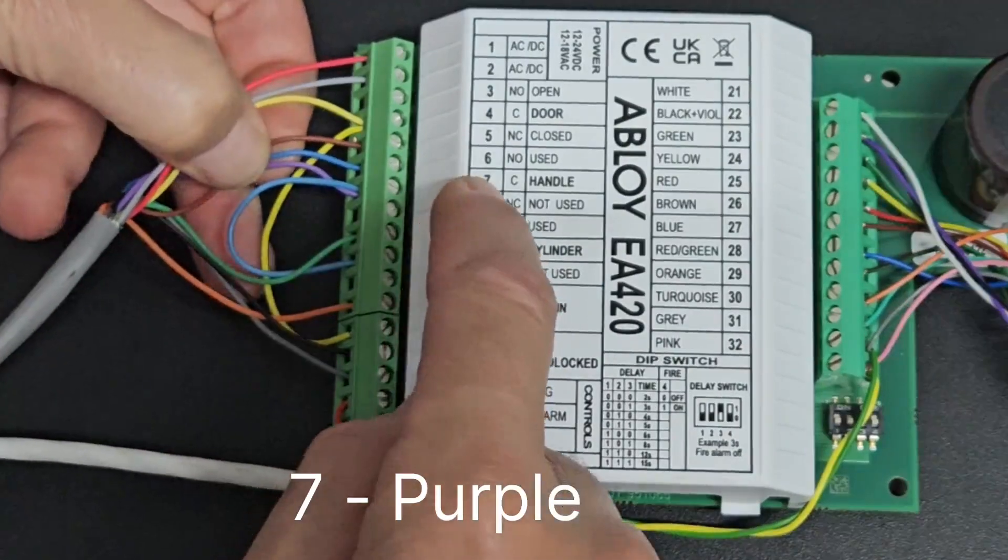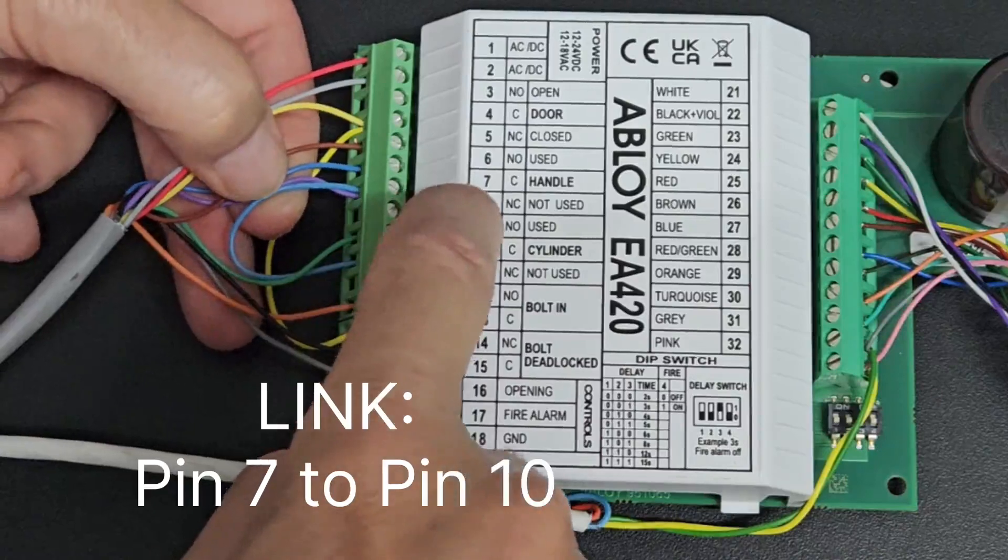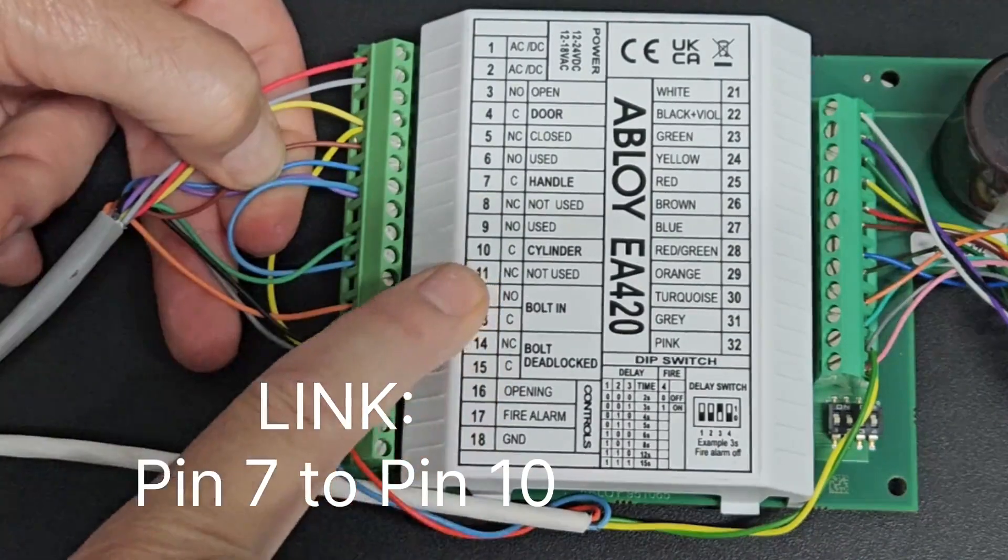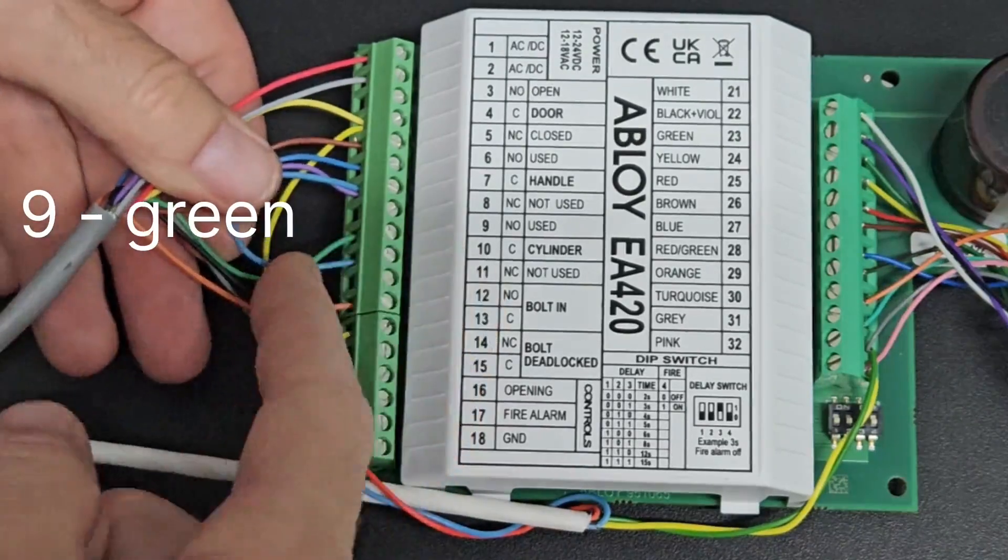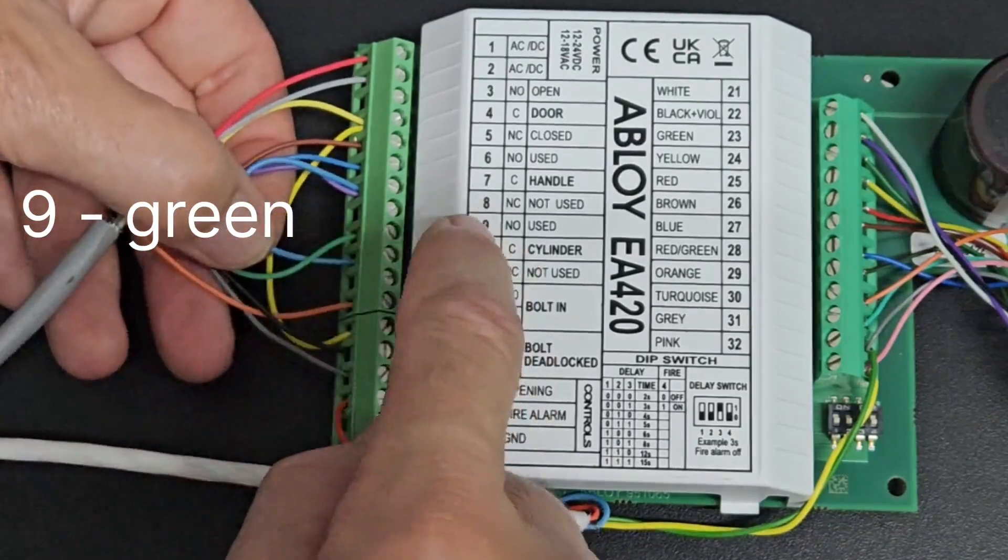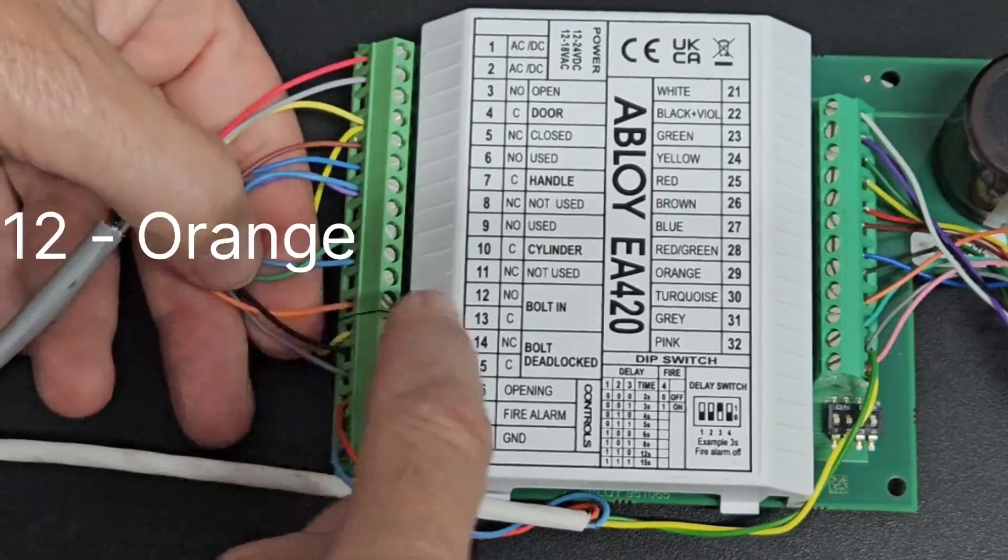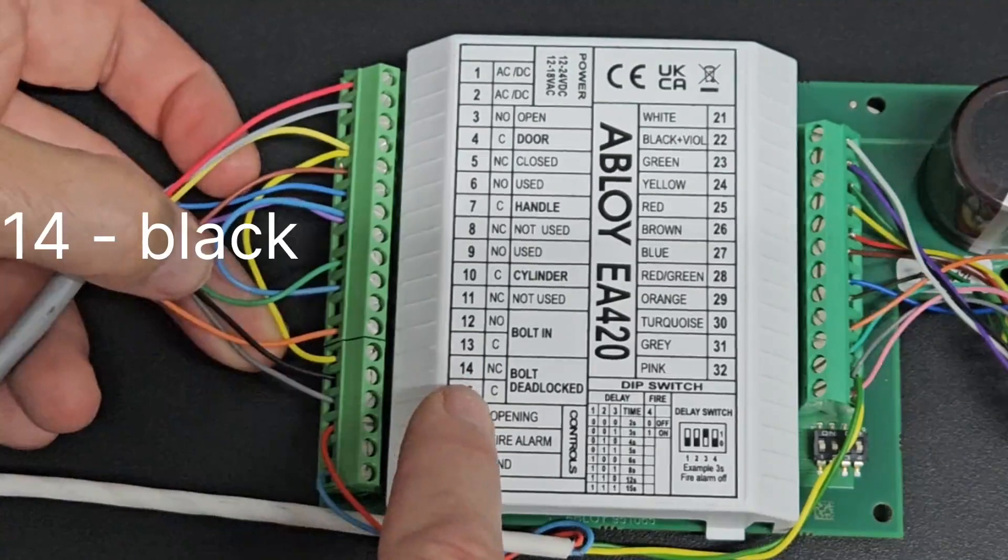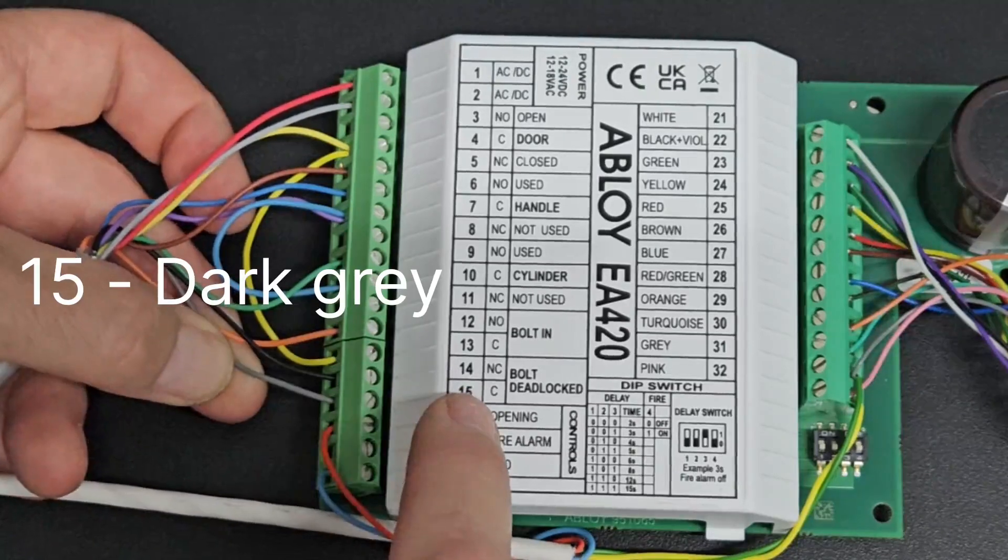Purple wire into number 7, and then a link going from pin 7 to number 10, then there's a green wire going into number 9, orange wire into number 12, black wire into 14, the dark grey wire goes into number 15.